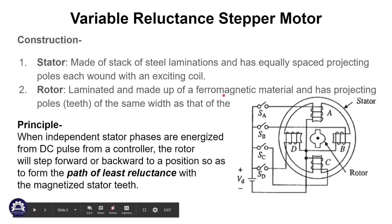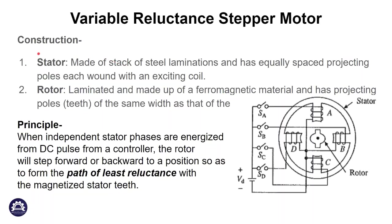The construction of the variable reluctance stepper motor follows a basic principle. The stator is constructed from a stack of steel laminations. The rotor is made of ferromagnetic material and is laminated. This is the principle of this stepper motor.